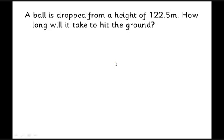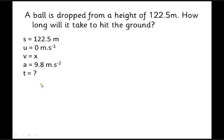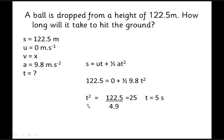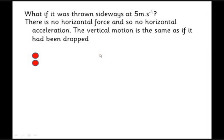The first stage is to remind ourselves that if something's dropped we need to work out how long it takes to hit the ground. Here's something dropped from 122.5 meters. Just like we did before we can do SUVAT—there's our data. If we use the equation without v in it, we can do the maths and we end up finding it takes five seconds to hit the ground. So if we drop something from 122.5 meters, it takes five seconds to hit the ground. There it goes.